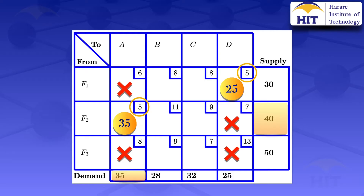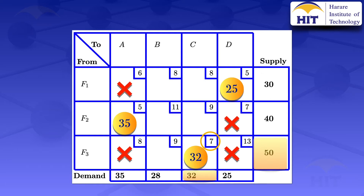Crossed-out cells are no longer considered when looking at least costs. The next least cost that is not crossed out and does not have an allocation is a seven. For this cell, the supply is 50 and the demand is 32. We take the minimum of 32 and 50, giving us 32, so we allocate 32 units there. This meets the demand requirements for destination C, so we cross out the remaining cells in that column.